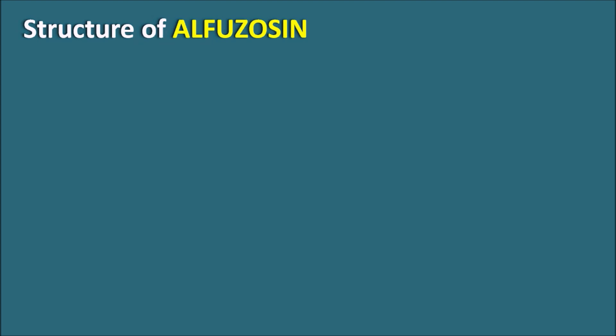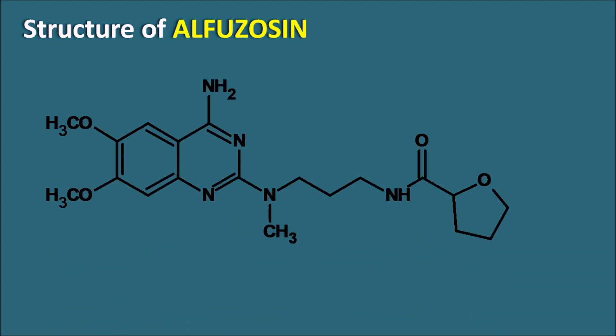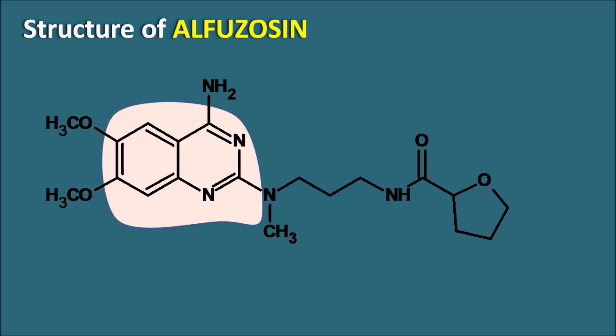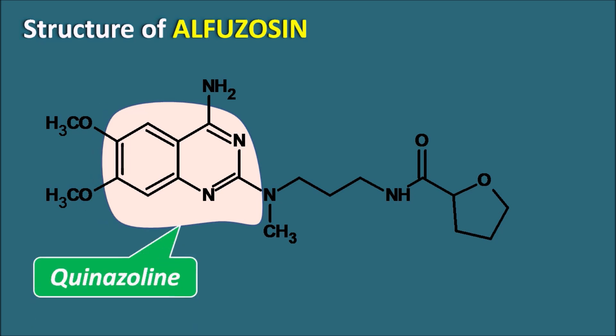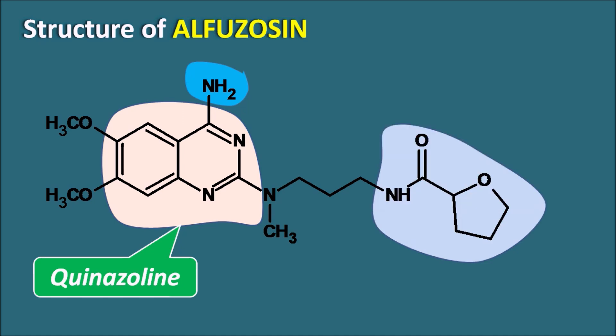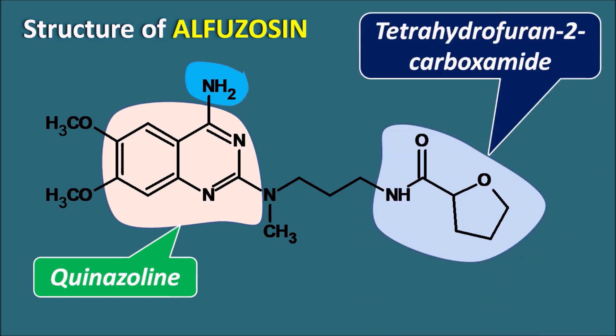Let us look at the structure of Alfuzosin. Since this drug ends with the suffix '-zosin,' it shares similar structural features compared with other drugs like Prazosin, Doxazosin, and Terazosin. One common structural moiety is the heterocyclic ring system — the quinazoline moiety. This quinazoline is attached with an amine group at the fourth position, so all these alpha-1 blockers are quinazolin-4-amines. There is also a side chain at the second position, terminating in a tetrahydrofuran-2-carboxamide moiety. So Alfuzosin is a quinazolin-4-amine derivative.